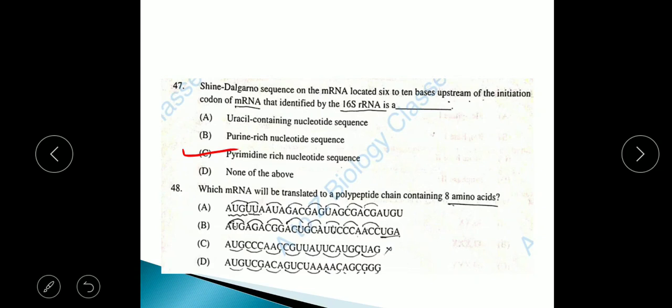Question 48: Which mRNA will be translated to a polypeptide chain containing 8 amino acids? First, stop codon must not be there in between. The answer is option B. Stop codons are UAG, UGA, UAA. Here the stop codon is present at last.